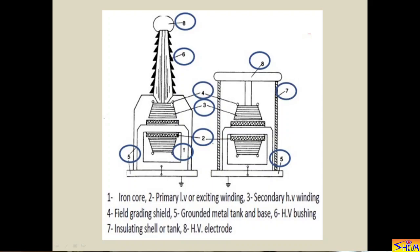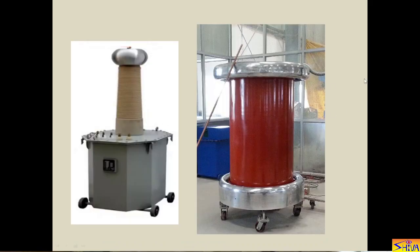The electric field distribution may not remain uniform inside the transformer. The grounded metal tank is shown here. The high voltage bushing is the component through which the high voltage terminal is taken out. The insulated shell — that is, the insulated body or insulated tank — houses the high voltage terminal. This is the inside structure of this transformer.